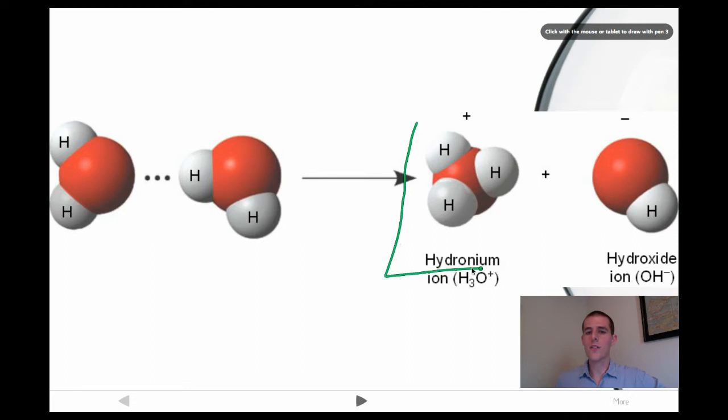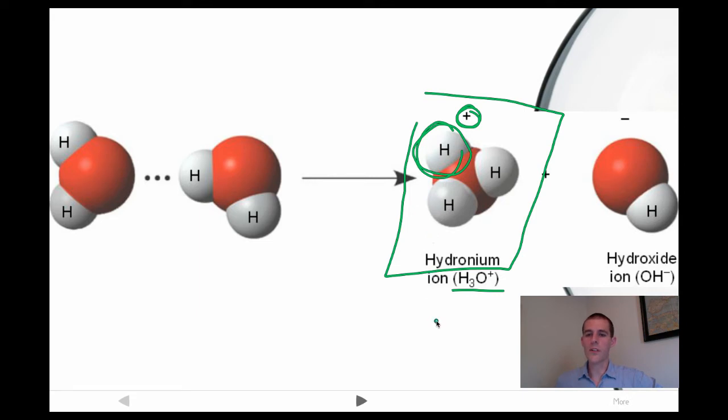The first one is known as the hydronium ion. This guy gets the extra hydrogen. You can see him hanging out there. The formula is H3O. And since we got this extra hydrogen, who is positive, hydronium ions have got a positive charge. For the purpose of our discussion, hydronium ions are just going to be known as H+.